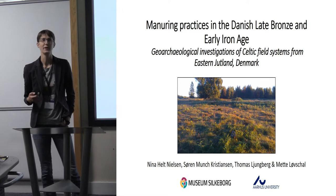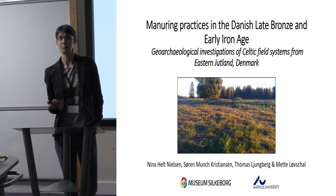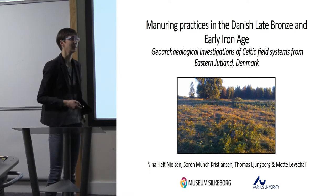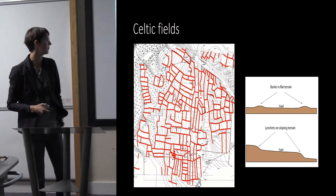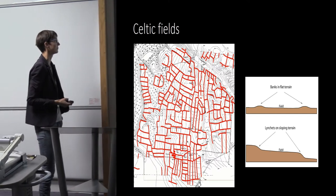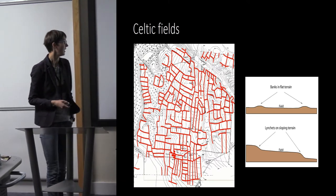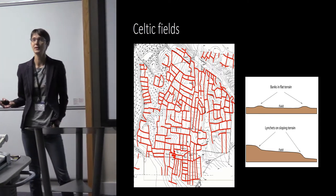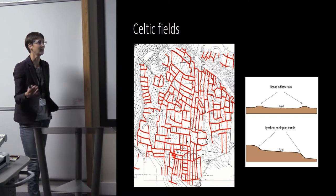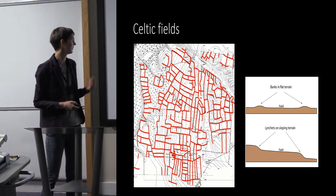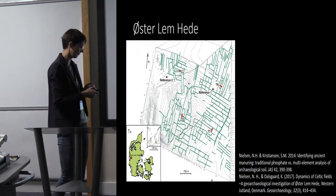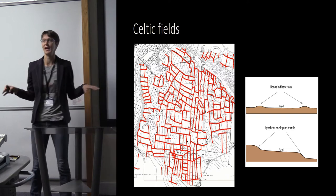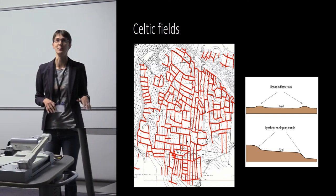In the period from around 700 BC to AD 200, arable farming in Denmark and large parts of Northern Europe took place in Celtic fields, which are characterized by this net-like pattern of field boundaries that enclose individual fields. The boundaries are either low banks in flat terrain or lynchets in more sloping terrain.